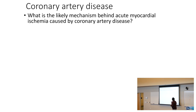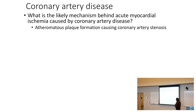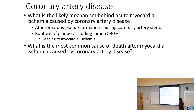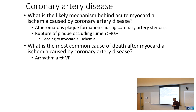What is the likely mechanism behind acute myocardial ischemia caused by coronary artery disease? You are going to be thinking of atheromatous plaque formation causing coronary artery stenosis. That plaque is plugging up that coronary artery. The rupture of the plaque occluding greater than 90% of the lumen is going to cause this myocardial ischemia. The most common cause of death after myocardial ischemia caused by coronary artery disease is going to be an arrhythmia — typically ventricular fibrillation.